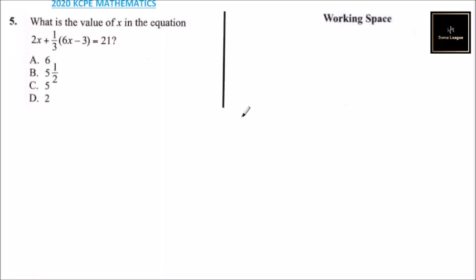This is question number 5. What is the value of x in the equation 2x plus one-third times (6x minus 3) equals 21?